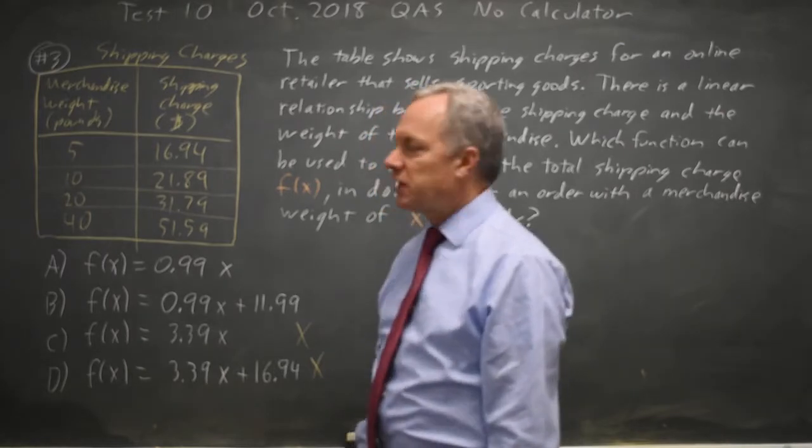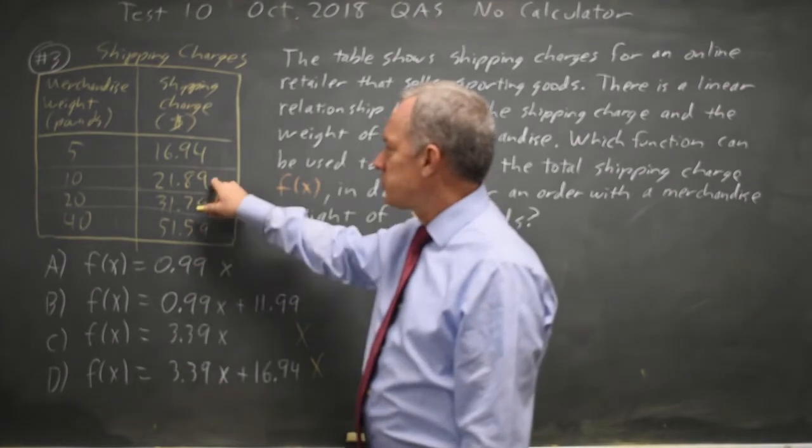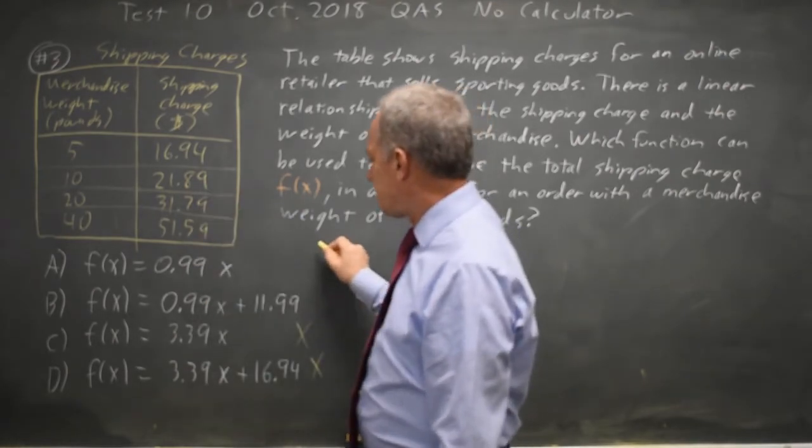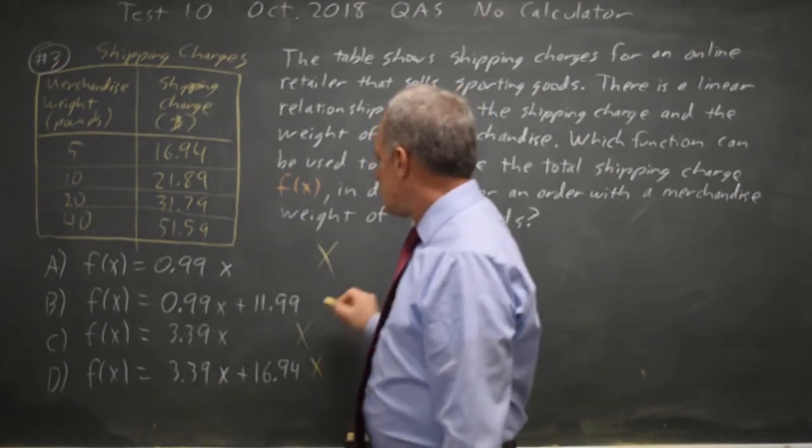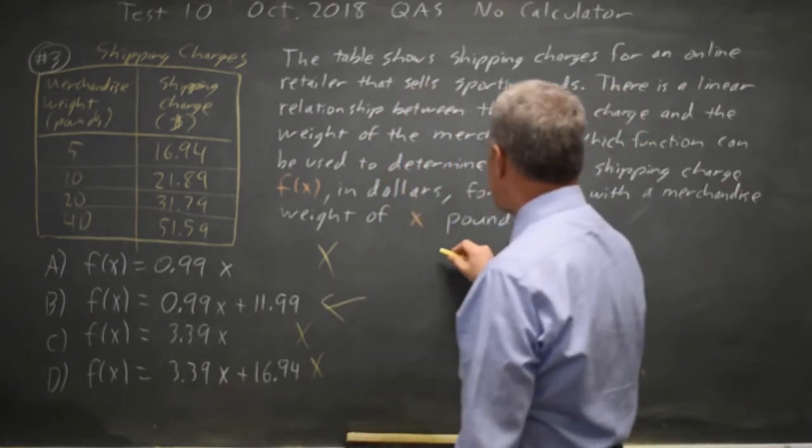The question is, is it A or B? At x equals 10, choice A is $9.90, but it's supposed to be $21.89, so that's wrong. The correct answer has to be B, but let's actually check it because we'll feel better about that.